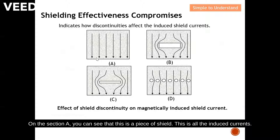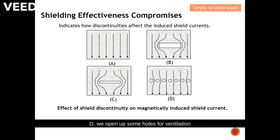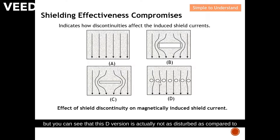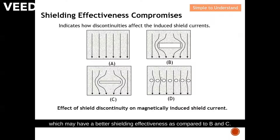In case A, you can see a piece of shield with induced current flowing in its intended direction — no disturbance at all. In cases B and C, the induced current is caused to detour, which degrades shielding effectiveness. In case D, some holes are opened for ventilation and the induced current is also disturbed, but case D is not as disturbed as B and C. Even though the total area of the holes in D adds up to the area of C, D does not disturb the induced current as much, giving better shielding effectiveness.